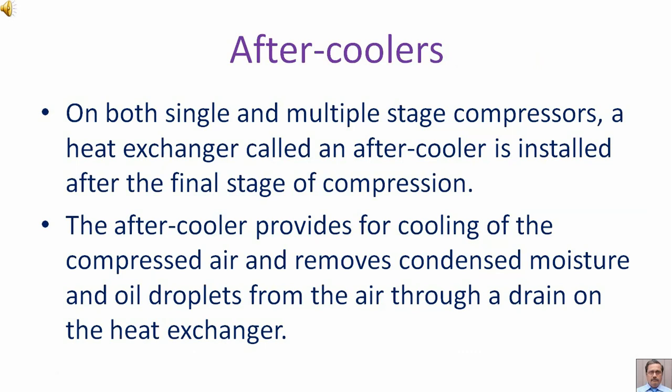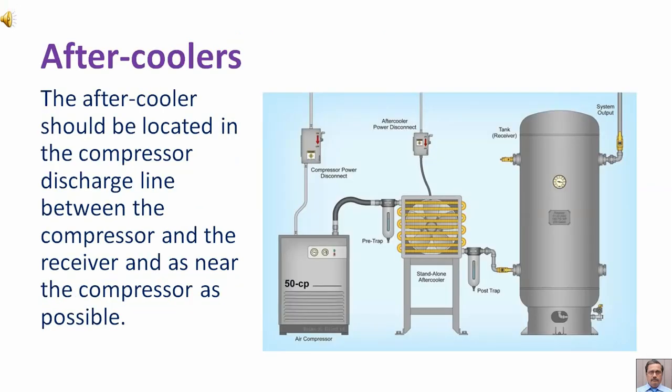On both single and multiple stage compressors, a heat exchanger called an aftercooler is installed after the final stage of compression. The aftercooler provides for cooling of the compressed air and removes condensed moisture and oil droplets from the air through a drain on the heat exchanger. The aftercooler should be located in the compressor discharge line between the compressor and the receiver, and as near the compressor as possible.